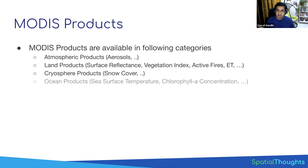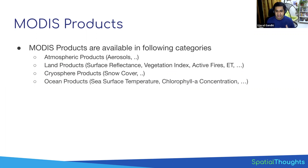You also get snow cover products and ocean products. If you're studying the sea, you get data like sea surface temperature and chlorophyll concentrations, which allow you to measure water quality — especially coastal water quality.